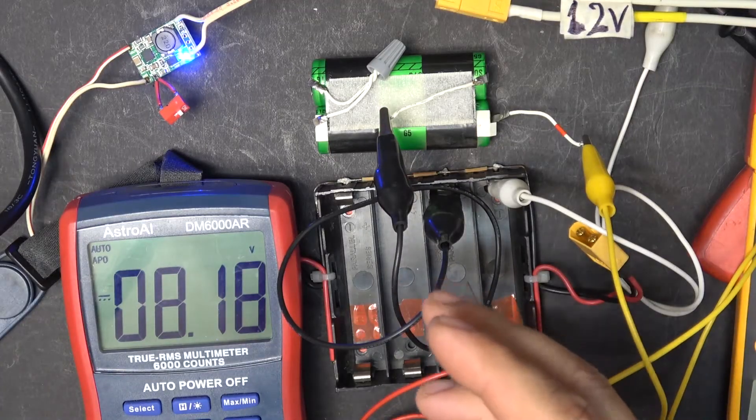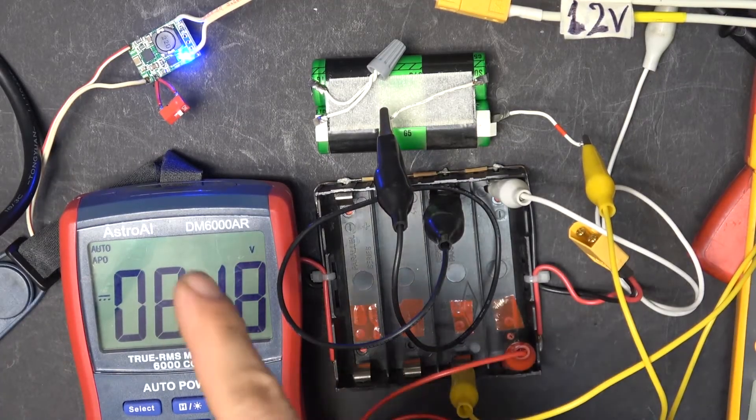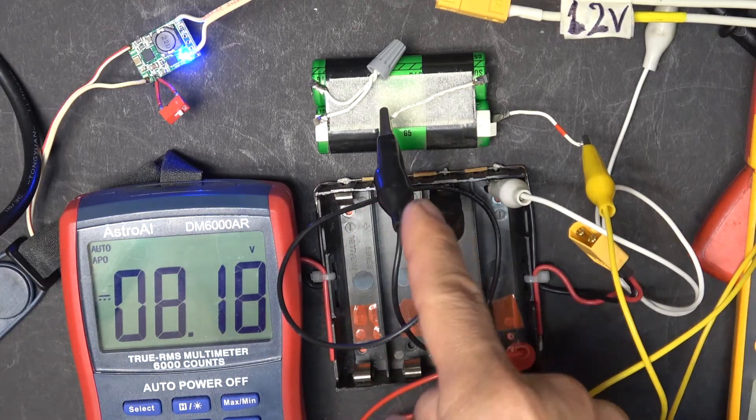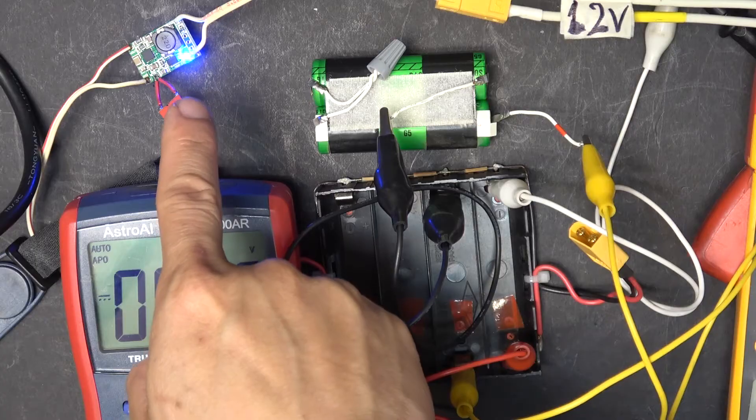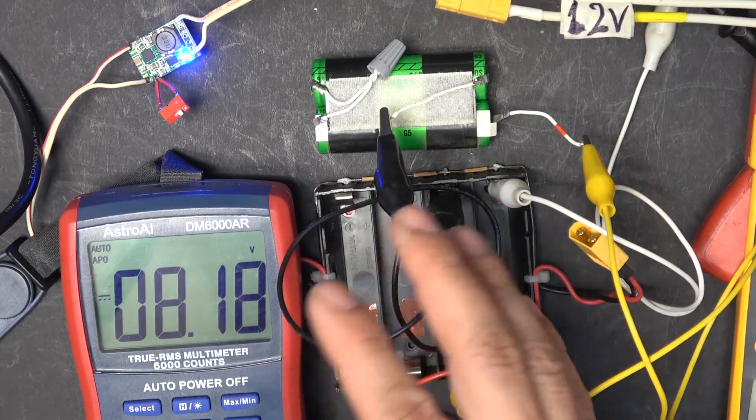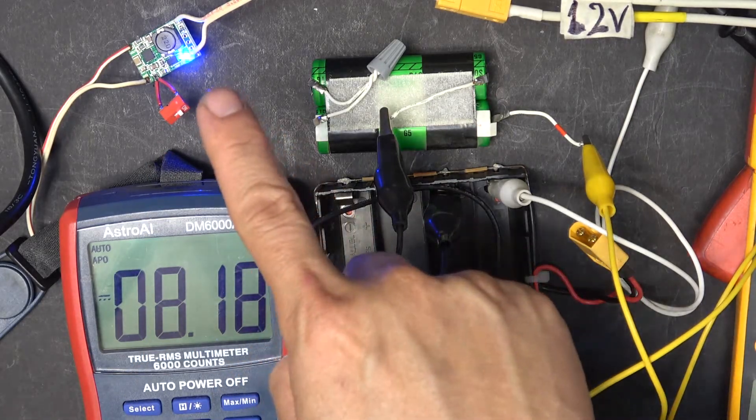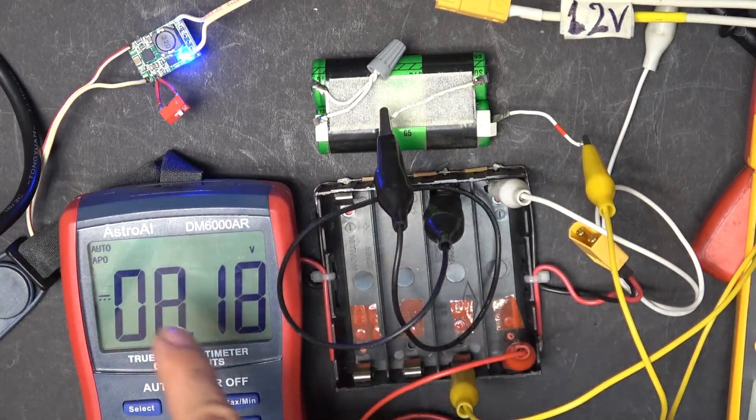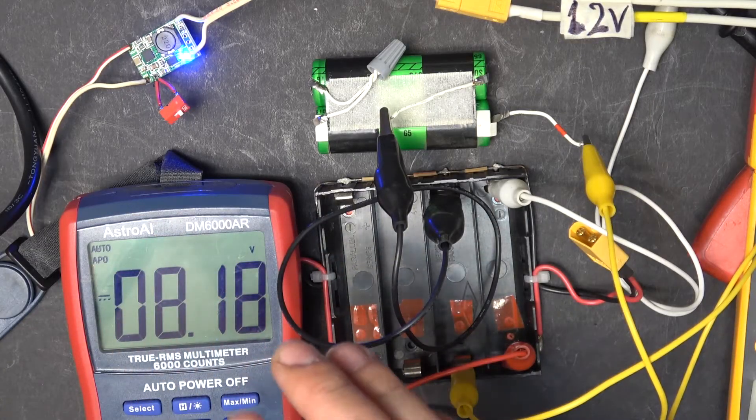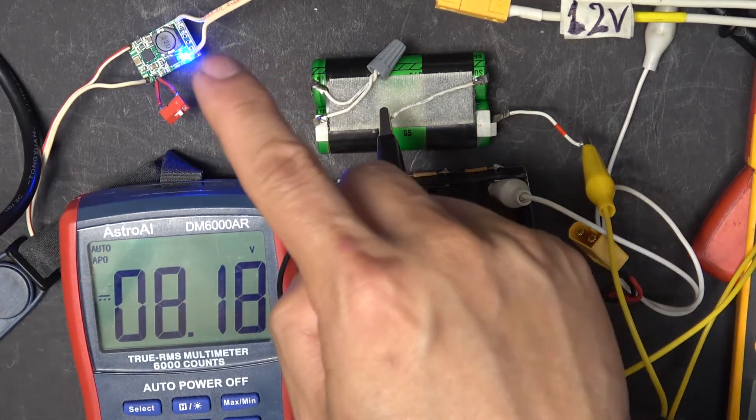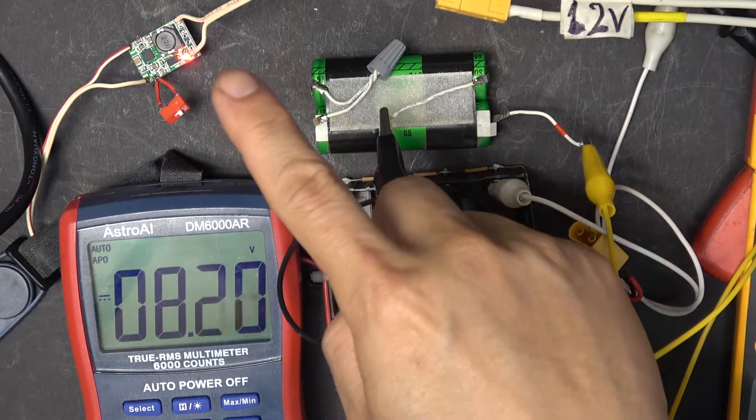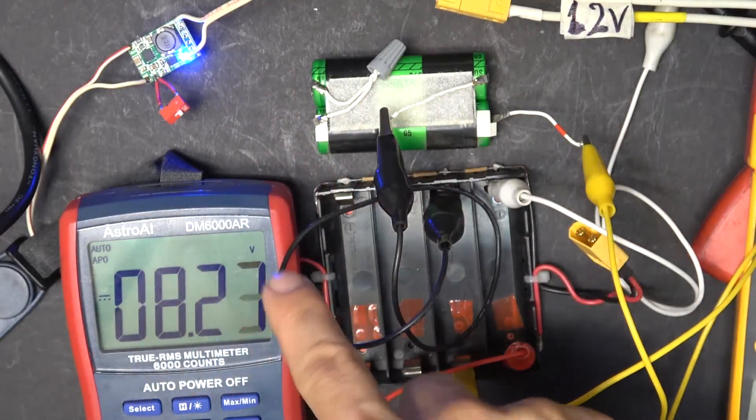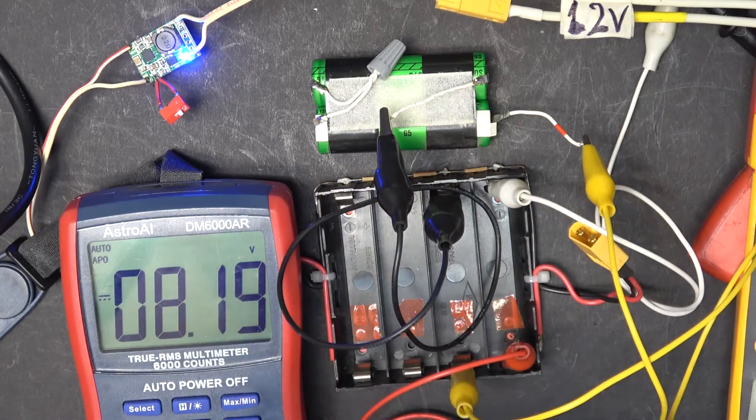There's one thing I like about this board: it has a float charge option. Right now my battery is full at 8.18 volts and the light is blue. But once every 20 seconds or so, the light will turn red and the voltage will increase just for a brief moment. Then the light will turn back to blue again and the voltage goes back down.